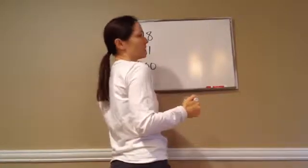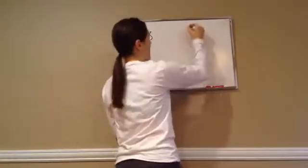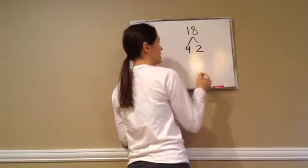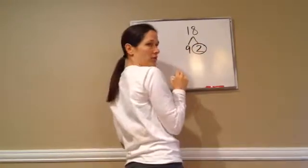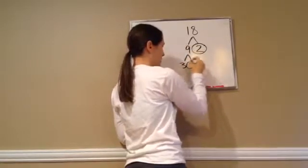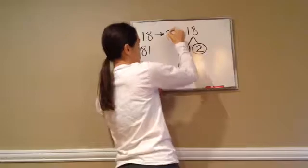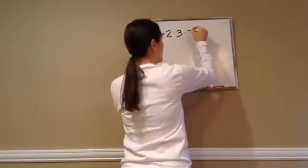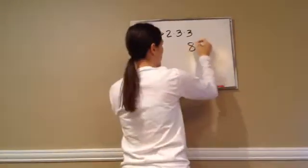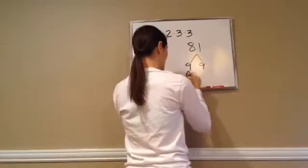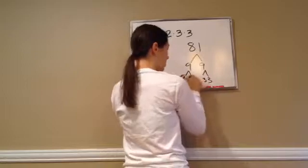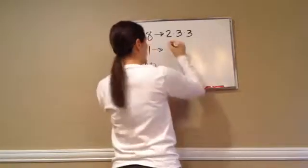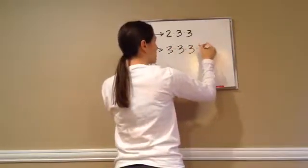The method is to find all the prime factors. We do that by going 18 and coming up with all of our prime numbers. 9 times 2 is 18, so 2 is a prime factor, and then 3 times 3, and those are both prime factors. So for 18, we get 2 times 3 times 3. Now let's do 81. For 81, 9 times 9, and then 3 times 3, and 3 times 3. All of these are prime numbers, so for 81 we get four 3s: 3 times 3 times 3 times 3.